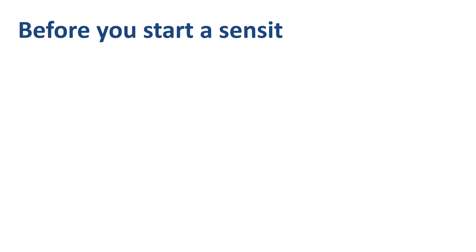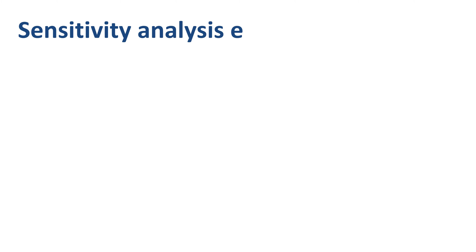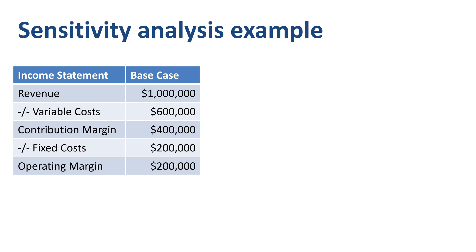Prior to starting a sensitivity analysis, you first need to decide what the key performance indicators — the target variables — are. Here's an example of sensitivity analysis. Let's start off with the base case on the left. The projected income statement of a company has $1 million of revenue, minus $600,000 of variable costs, which leads to $400,000 of contribution margin. After deducting fixed costs of $200,000, operating margin is $200,000.